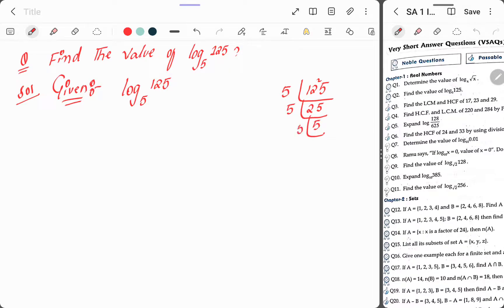So for log base 5 of 125, in place of 125, the 5 is repeating three times.